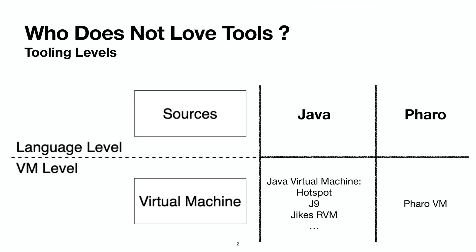So, who does not love tools? I'm going to distinguish in this presentation the language level, which is basically the sources of your code — what I write in Java, Python, or Pharo, because our experiments here are in Pharo — and the VM level, so the virtual machine level. For Java, that's the Java virtual machine, the HotSpot virtual machine, J9, JxRVM, etc. And for Pharo, the Pharo virtual machine, again because our experiments are on this programming language.